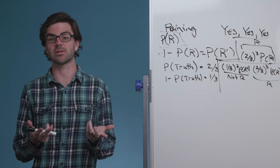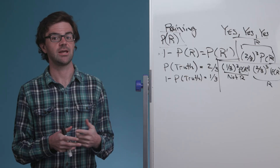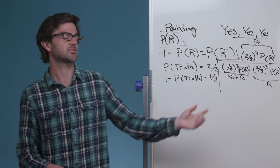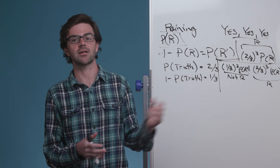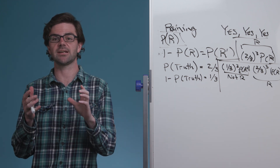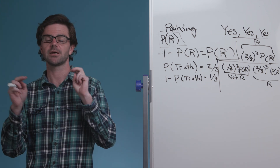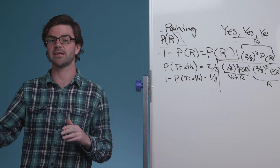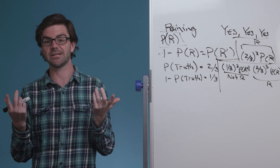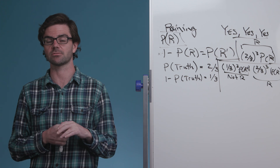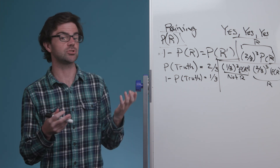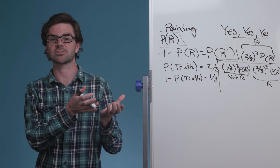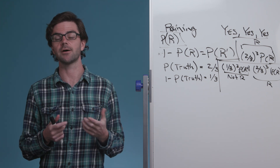One thing an interviewer looks for when asking this question is whether you understand each component of the solution. Can you find the probability of rain and not rain? Do you understand that yes/yes/yes can arise from it not raining with three lies, or from it raining with three truths? Do you understand independence and that you can multiply these probabilities directly?